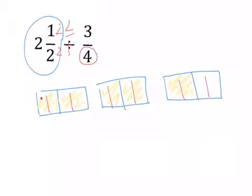So now really I have this whole box, this whole box, and then one, two out of my one, two, three, four pieces.